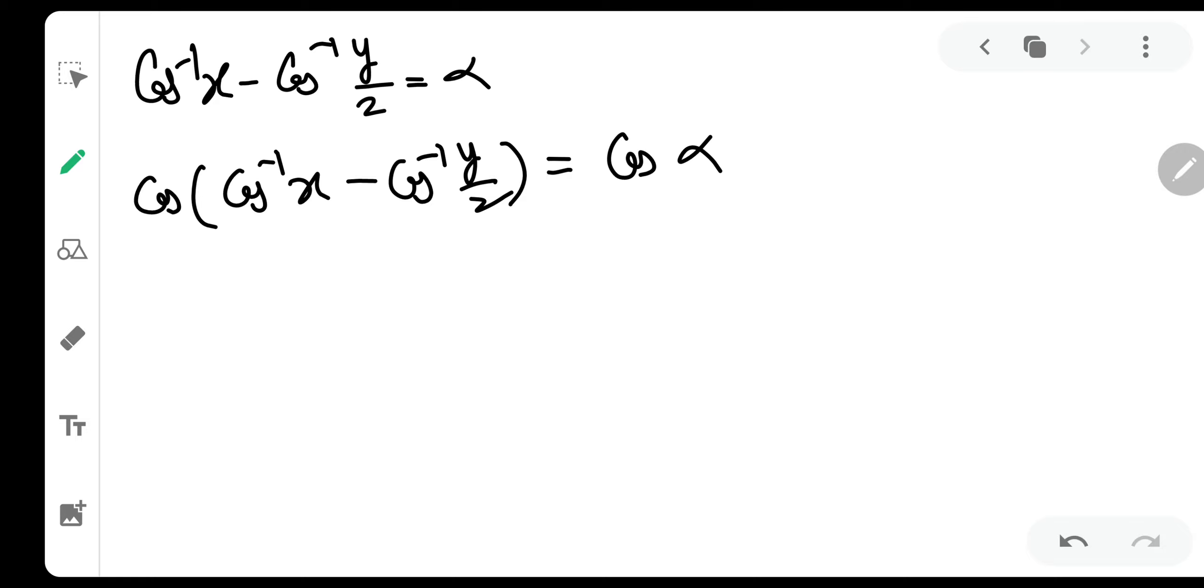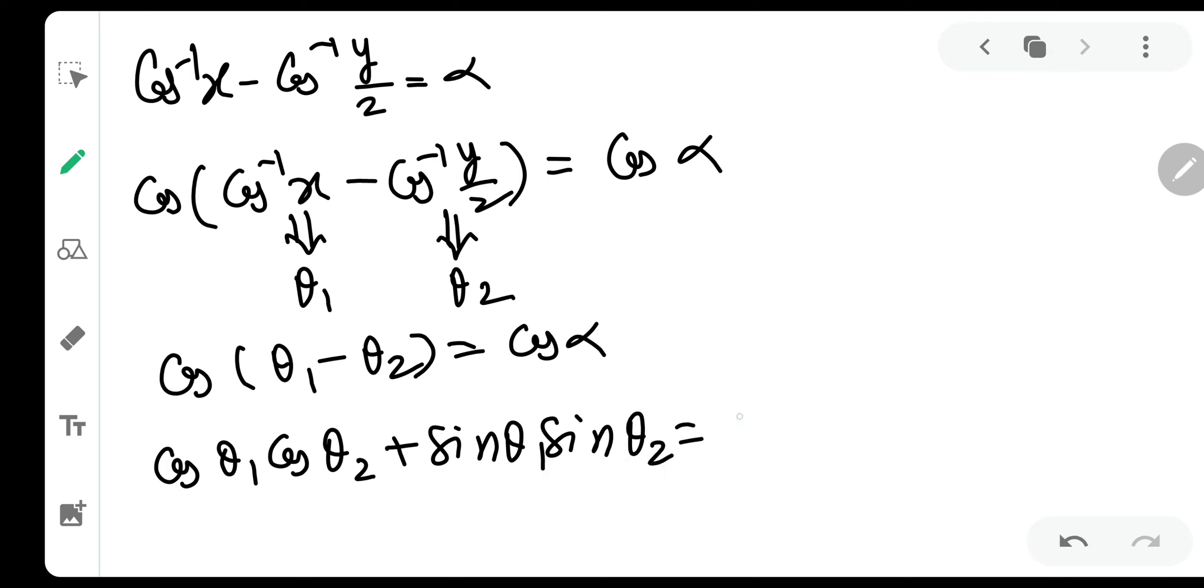So now how to proceed further? I will give you a very brief encounter about this. Call this as theta 1, call this as theta 2. So this will turn into cos theta 1 minus theta 2 is equal to cos alpha. So just apply the formula cos theta 1 cos theta 2 plus sin theta 1 sin theta 2 is equal to cos alpha. See, I am just going with the flow.